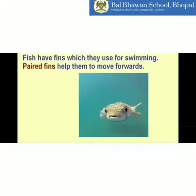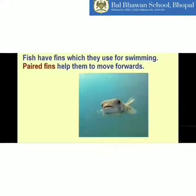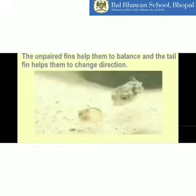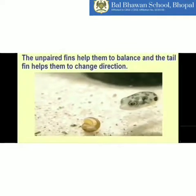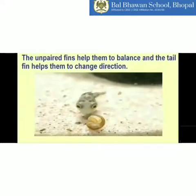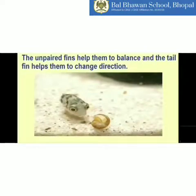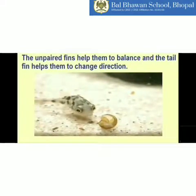Now let's talk about fish. How do fishes swim? They swim with the help of their fins. Paired fins help them to move forward. Unpaired fins help them to balance, and the tail fin helps them to change direction. So they have three types of fins: paired, unpaired, and tail fin.